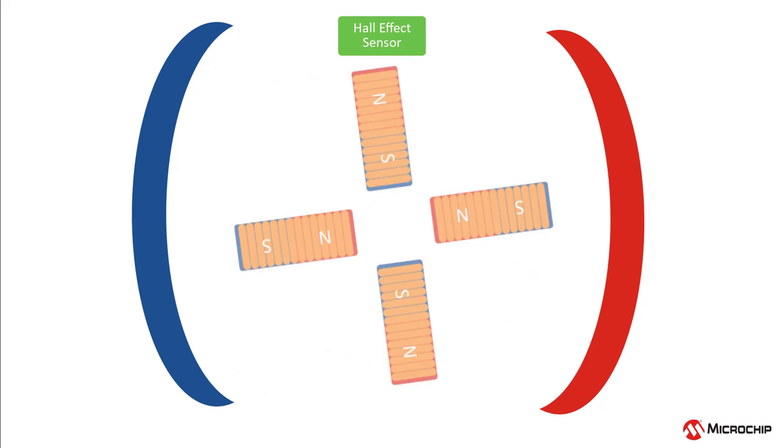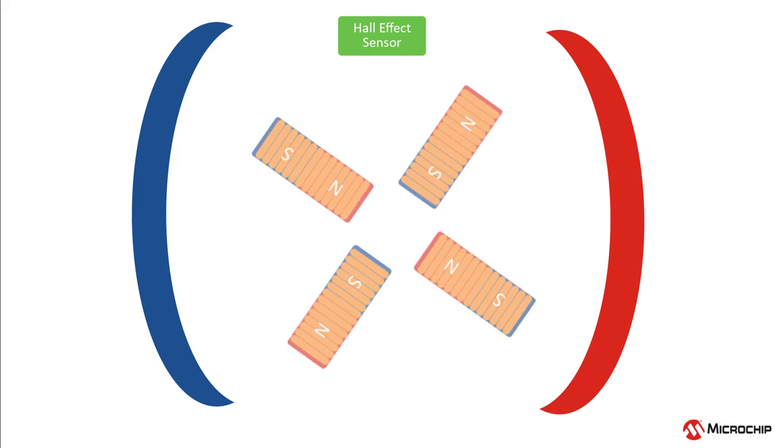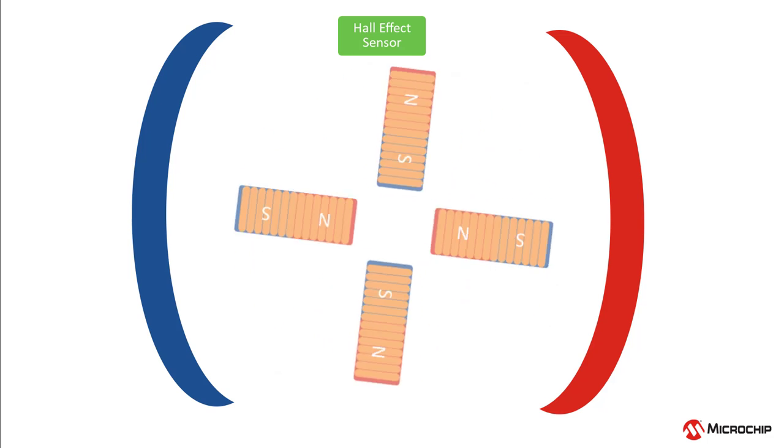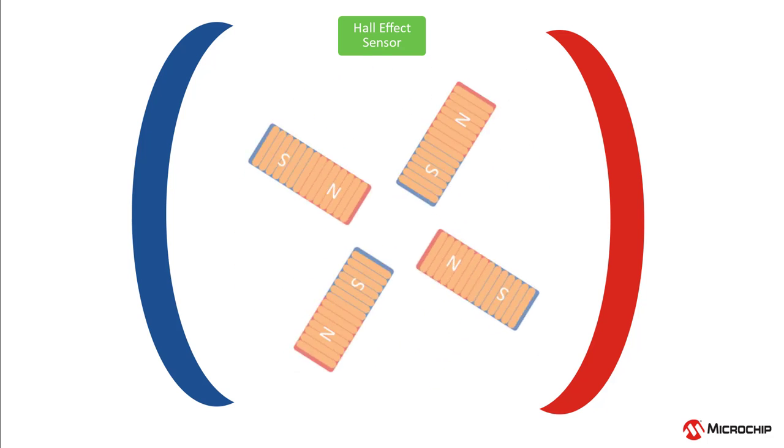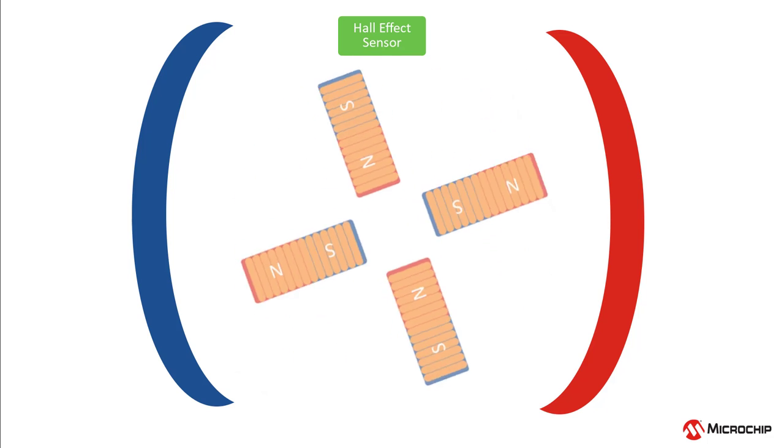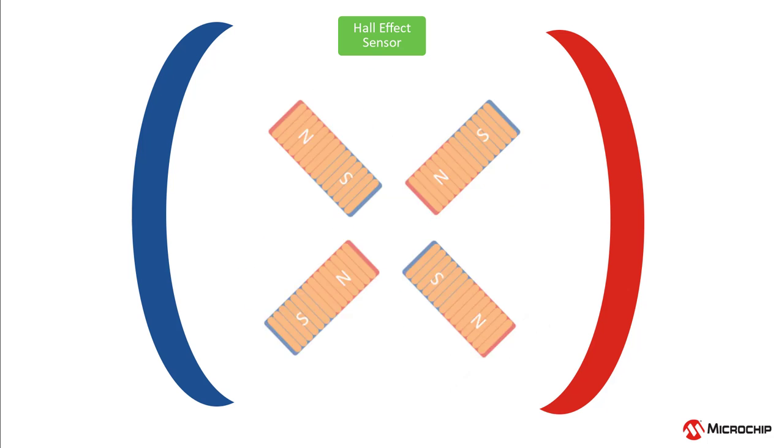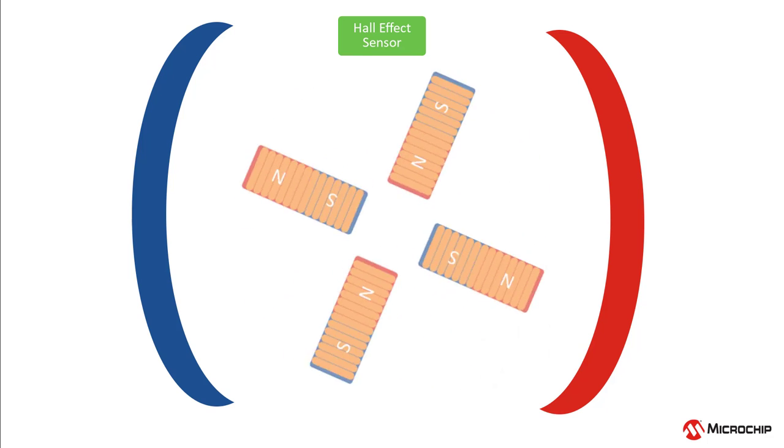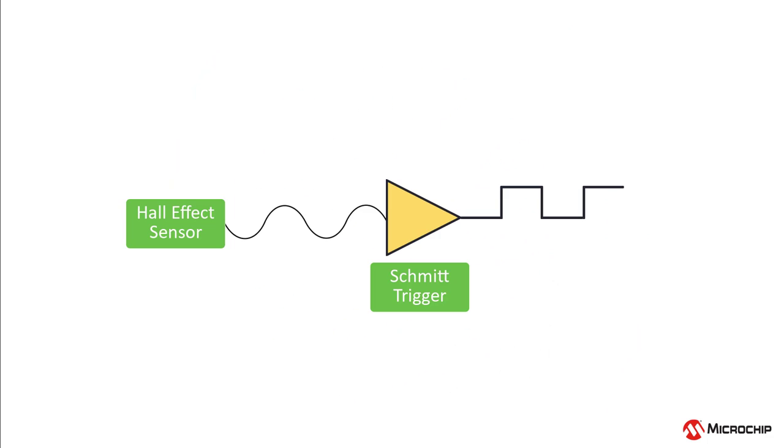In three- and four-wire fans, a Hall effect sensor senses the magnetic field changes caused by the rotation of the magnetic ring. When the magnetic field around the Hall effect sensor changes direction, the sensor's output follows the change to create a sine wave. The sine wave is fed to a Schmitt trigger to get a square wave output. This digital output is called the TAC signal.